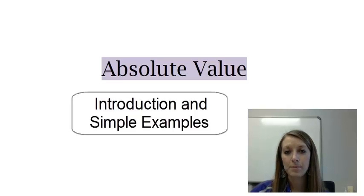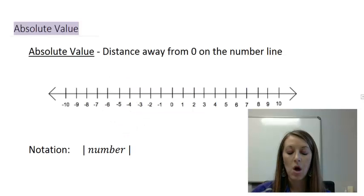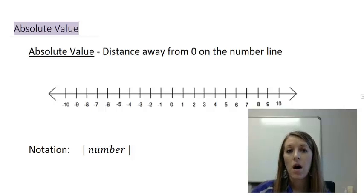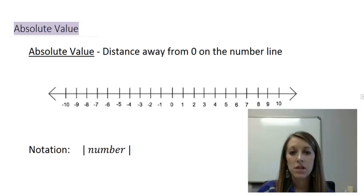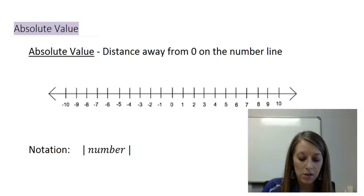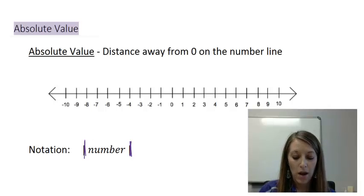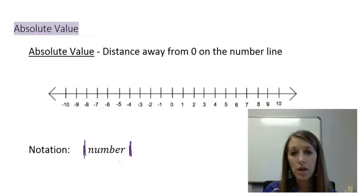This video is about absolute value. The first thing we need to talk about is the formal definition: absolute value is the distance away from zero on the number line. That is why this is tied in with the number line video. The notation for absolute value is two bars on either side of a number. Whenever we see those two bars on either side of a number, that means we're taking the absolute value of that number.